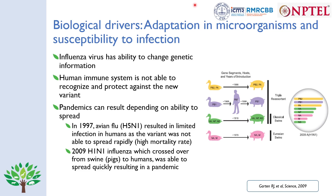There are two examples here. The 1997 avian flu H5N1, which started from Hong Kong, was not able to spread quickly — one reason being its high mortality rate meant the variant could not spread rapidly. In contrast, the 2009 H1N1 swine flu crossed over from pigs to humans with a low mortality rate and high transmissibility, spreading quickly and resulting in a pandemic.